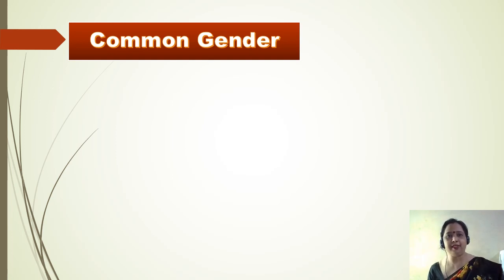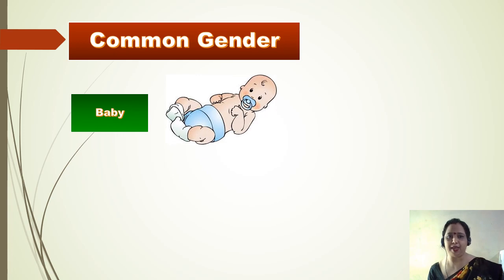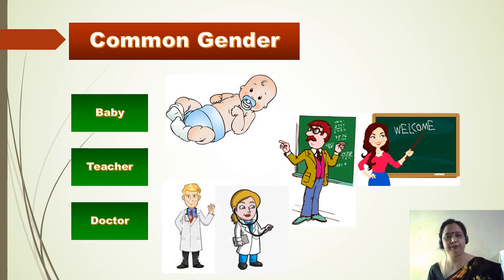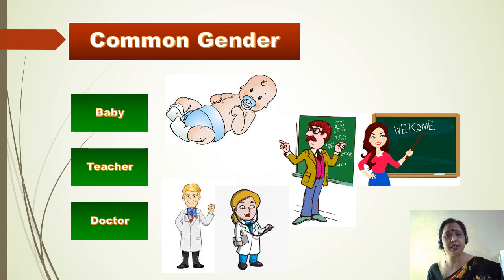When a noun is used for a member of a species that can be either male or female, it is called common gender. For example: baby, teacher, doctor, child, worker, friend, neighbor, and so on. Yesterday I saw a baby who was crying so loudly, but I didn't know whether it was a baby boy or a baby girl.